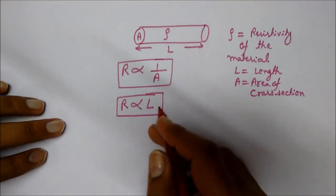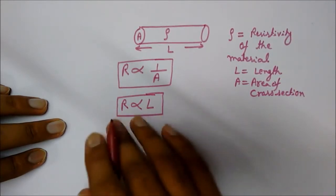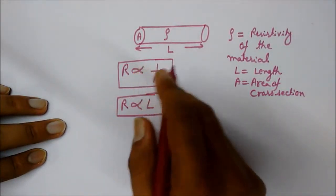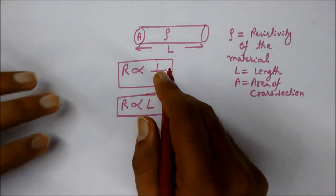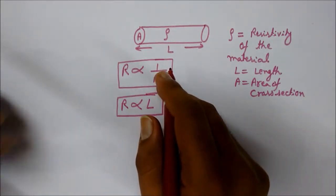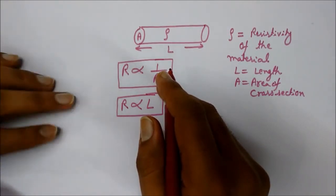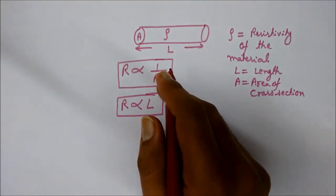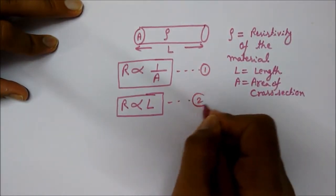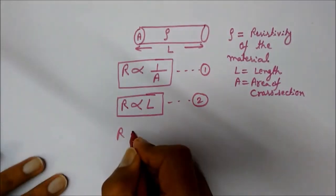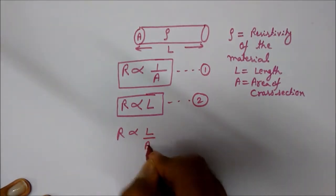The free moving electron has to encounter more collisions along its length, so resistance increases directly proportionally. Resistance is inversely proportional to the area of cross-section because as the area increases, free electrons get more space to move, reducing the effect of resistance. By combining these two equations, resistance is proportional to L divided by A.